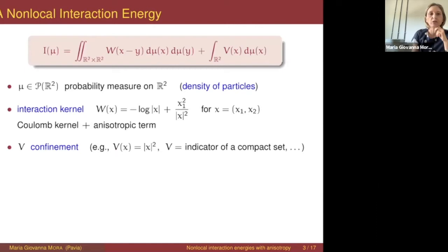The problem consists in minimizing the energy I in the class of probability measures in the plane. Here mu represents the density of particles at a continuum level.